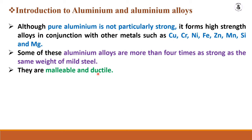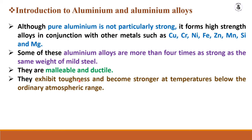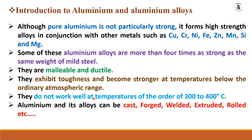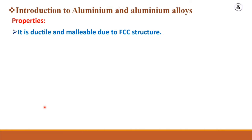Aluminium alloys exhibit toughness and become stronger at temperatures below the ordinary atmospheric range. However, they do not work well at temperatures of around 300 to 400 degrees centigrade. Aluminium and its alloys can be cast, forged, welded, extruded, rolled, or subjected to any kind of machining or forming process to make different components. The good ductility and malleability are due to the face-centred cubic (FCC) structure.